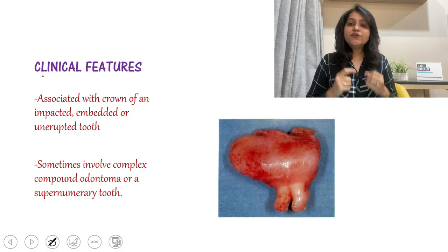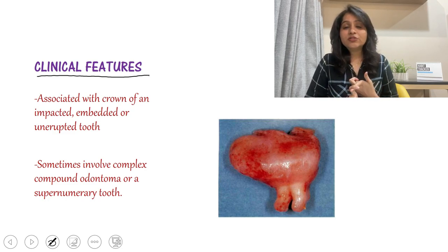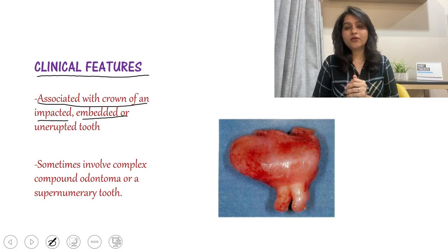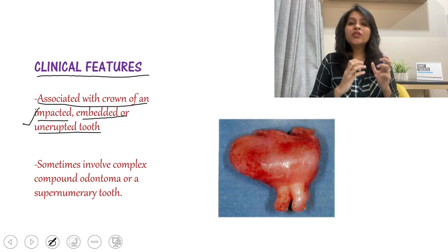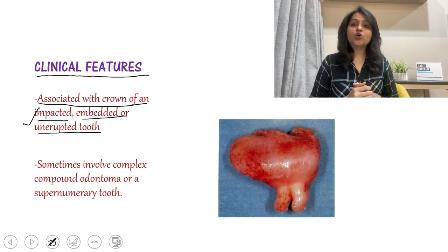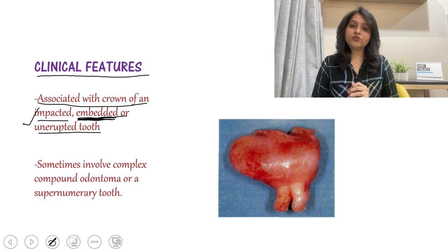Now let's see the clinical features of a dentigerous cyst. In clinical features you have to mention the common age of occurrence, the site of occurrence, in which sex it is more commonly seen, and the signs and symptoms. A dentigerous cyst will always be associated with an unerupted tooth — it can be impacted or embedded. An impacted tooth is when the tooth fails to erupt into the oral cavity because of some local obstruction, such as lack of space in the dental arch. An embedded tooth is when a tooth fails to erupt because of lack of eruptive forces.